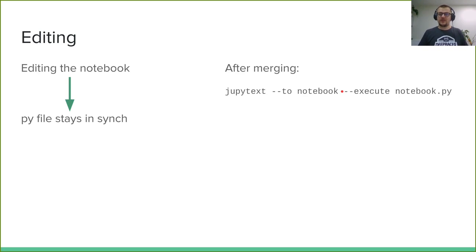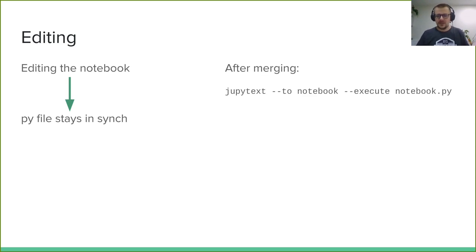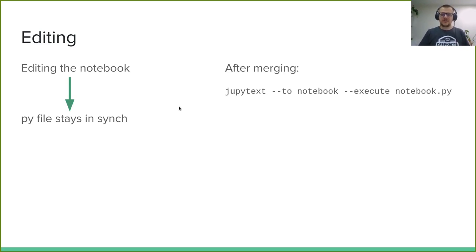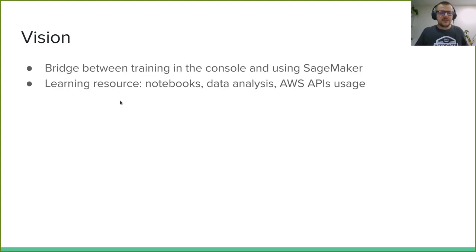Once you finish your work, you push to a branch, issue a pull request, and I'll compare the Python files - ignoring the notebook. If it makes sense, I merge it, then run the command to convert back to notebook and execute everything, so I have all the outputs. GitHub has a nice viewer for Jupyter notebooks, which is why I always make sure all notebooks work with the sample data. It's there, it runs, and you can see it's all working.